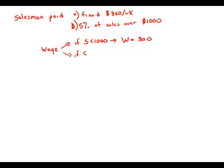And if the sales of the week are over $1,000, then the wage is $300 plus a 5% commission — that's 0.05 times (sales minus $1,000), the amount of sales that is over $1,000. So, as long as we know which case we're in, we know what formula to plug into.